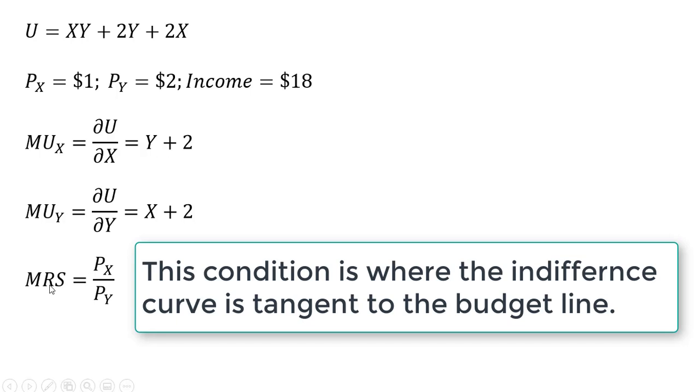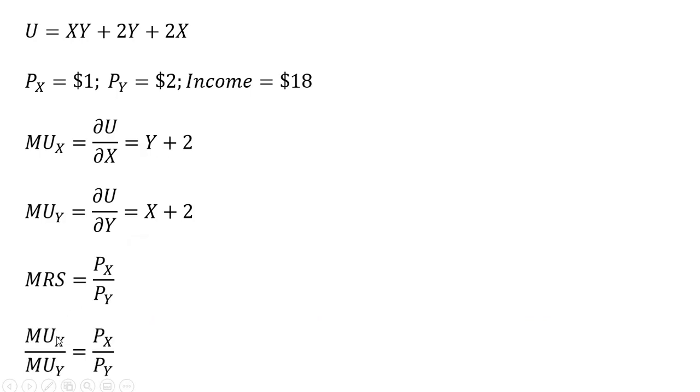To maximize utility, we can set the marginal rate of substitution equal to the ratio of the price of good X to the price of good Y. The marginal rate of substitution is simply the marginal utility of good X divided by the marginal utility of good Y.